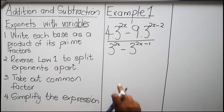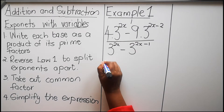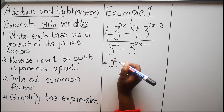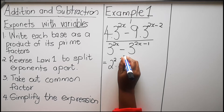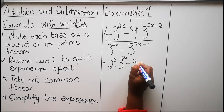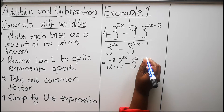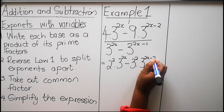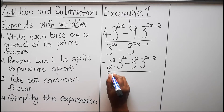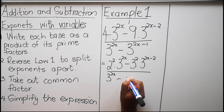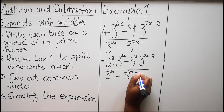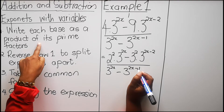So let's start with the first one. We are going to write each base as a prime factor. 4 is 2 to the power 2. 3 is a prime factor, so we are not going to change it. Minus 9 is 3 to the power 2. 3 to the power 2x minus 2, divided by 3 to the power 2x minus 3 to the power 2x minus 1. We've done the first part.